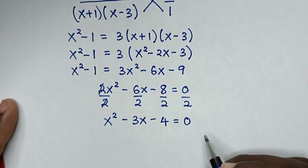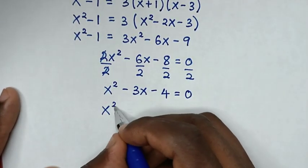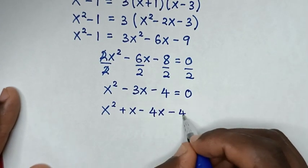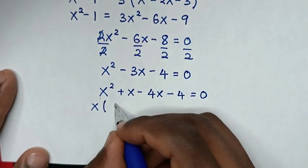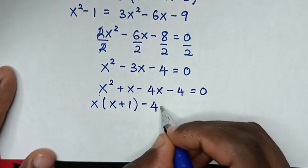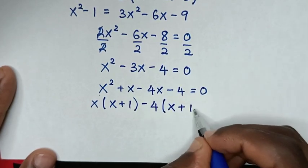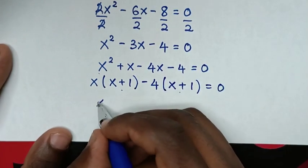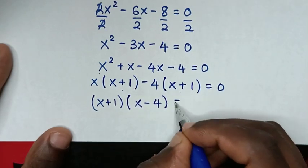From the quadratic x squared minus 3x minus 4 equals 0, we factorize: x squared minus 3x is the same as plus x minus 4x, then minus 4 equals 0. Taking x as common gives x(x plus 1), and negative 4 as common gives negative 4(x plus 1). So x plus 1 is common, giving (x plus 1)(x minus 4) equals 0.